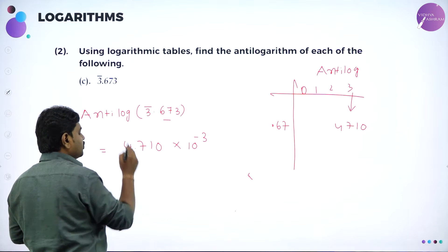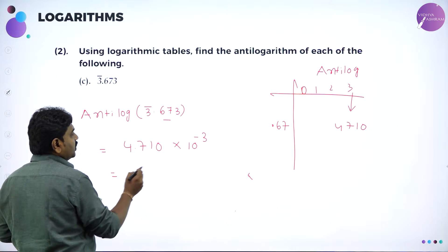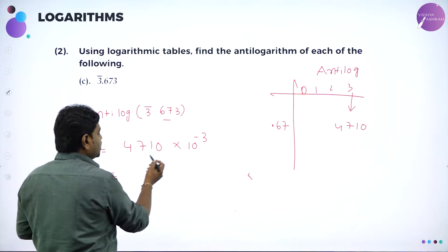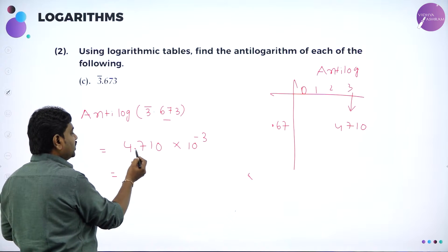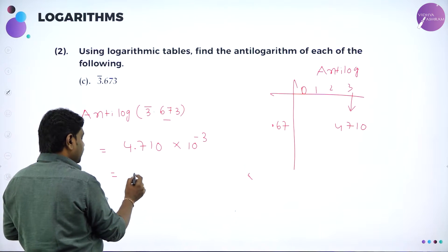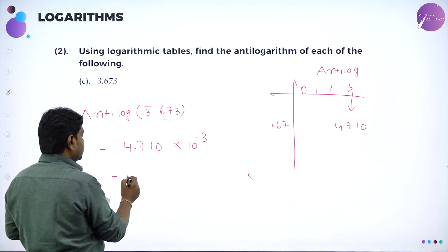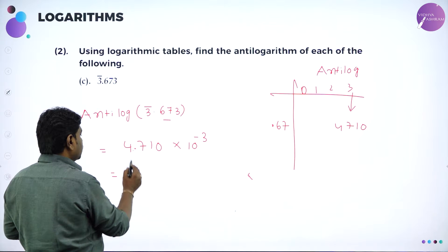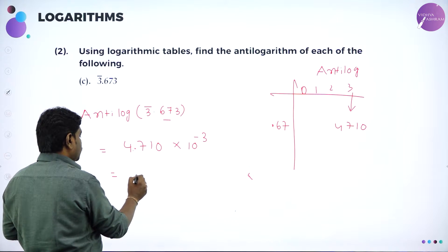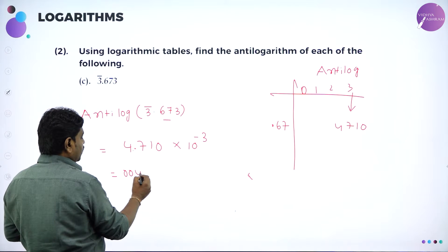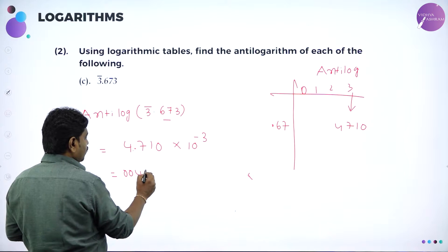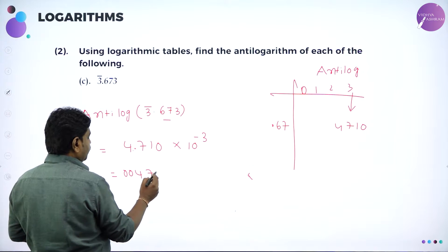Place the decimal after the first digit: 4.710. For 10 power minus 3, you left-shift the decimal point three digits, requiring two additional zeros.